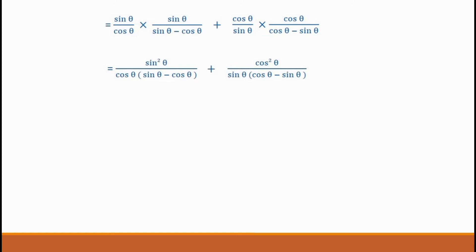We will simplify this process. We will make the denominator the same fraction. The first fraction has cos θ in the bracket (sin θ minus cos θ). That's why the denominator is (cos θ minus sin θ). We will add sin squared θ by cos θ into (sin θ minus cos θ), plus cos θ minus sin θ.